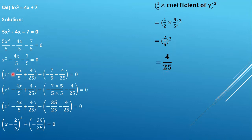So we get x² - (4x/5) + 4/25, and then minus 7/5 minus 4/25. Now we have to solve this fraction, but the denominators are not the same. Remember that when the denominators are not the same, we cannot directly subtract or add the numbers.